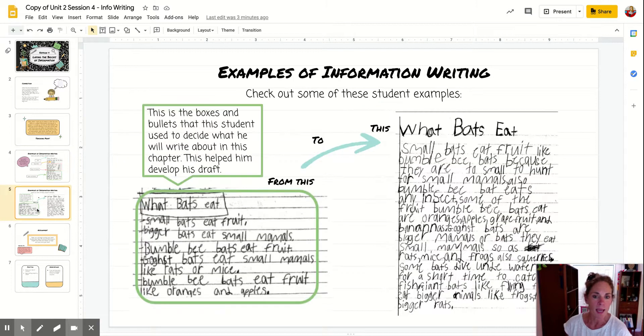Then on the next slide, you can see how he's taken that boxes and bullets about what bats eat and he's transferred it into writing. So I think he does a nice job of taking these pieces of information, and rather than just taking exactly what he wrote on his boxes and bullets and moving it over into a paragraph, he's actually put them together a little bit. So for example, where he says small bats eat fruit and bumblebee bats eat fruit, he says here, small bats eat fruit like bumblebee bats because they are too small to hunt for small mammals.